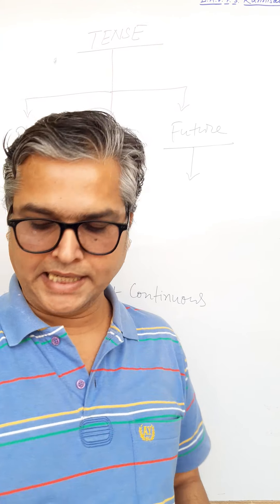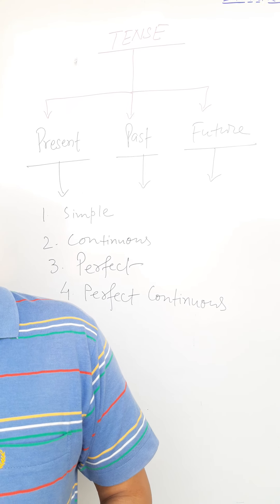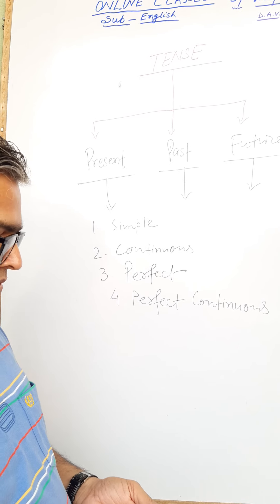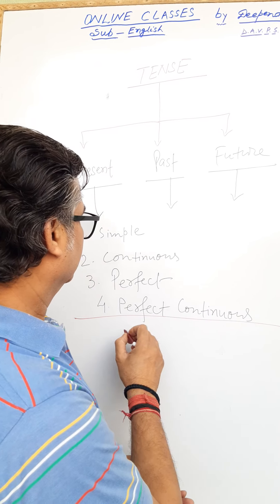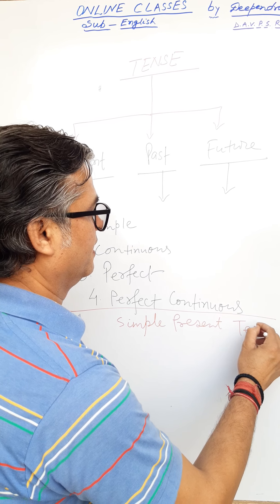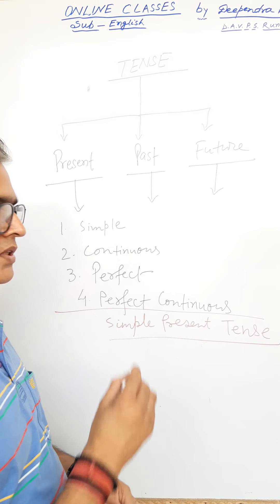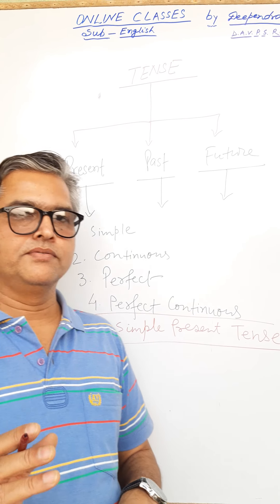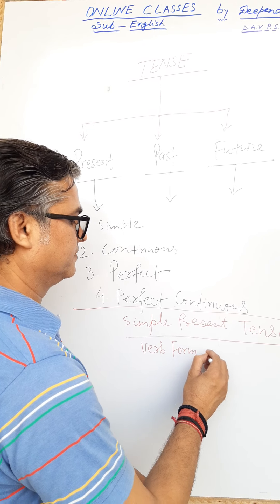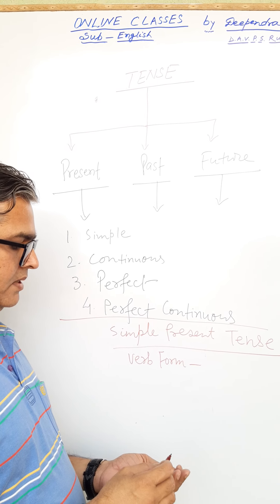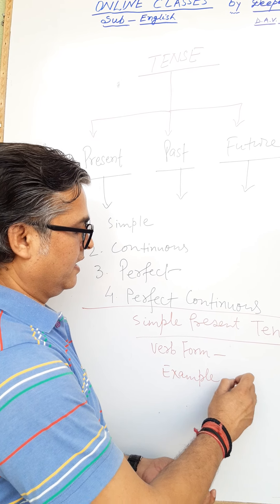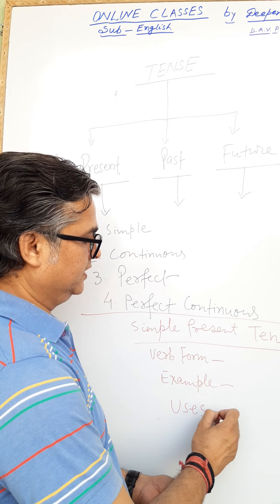Let us start with present tense. In present tense we will read four types. In every tense we will study the verb form, then examples, and then uses. You have to know these three things — verb form, examples, and uses — for each of the twelve tenses we are going to study.